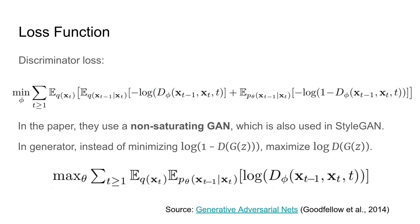In the paper they use a non-saturating GAN which is also used in StyleGAN. This means that in the generator, instead of minimizing the inverted discriminator probability, we maximize the discriminator probability directly. In this formula, x_t is from the diffusion process, x_{t-1} is produced by the generator based on x_t, and the inner term is the log of the discriminator probability based on these values.